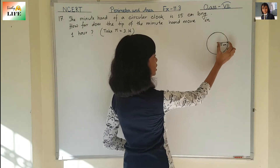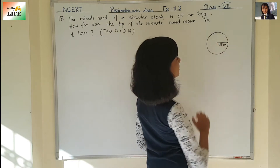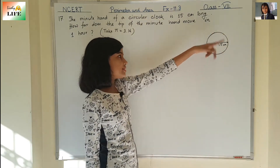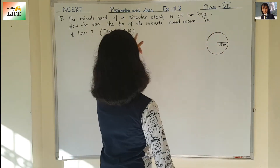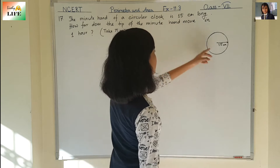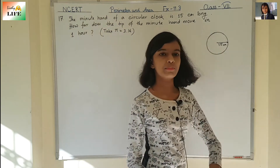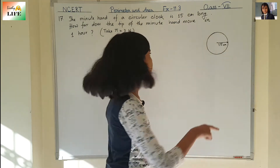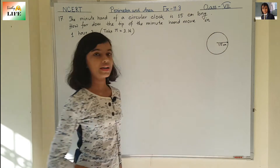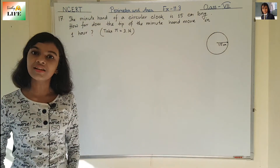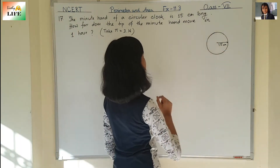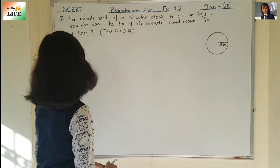So this is the minute hand. Suppose this is the circular clock and the length of the minute hand is 15 centimeters. So if we take this as the circle, then 15 centimeters is the radius of the circle. 15 centimeters is the radius.